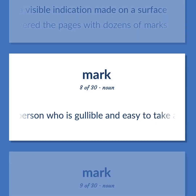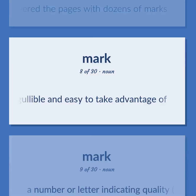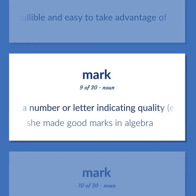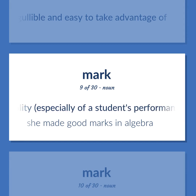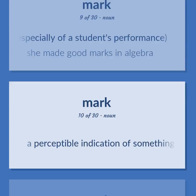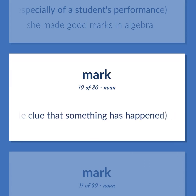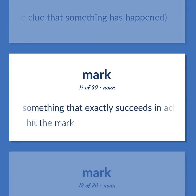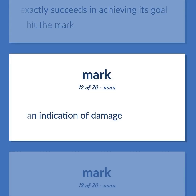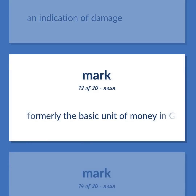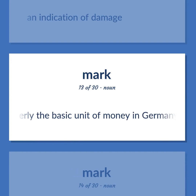Mark: A person who is gullible and easy to take advantage of. A number or letter indicating quality, especially of a student's performance. Example: She made good marks in algebra. A perceptible indication of something not immediately apparent, as a visible clue that something has happened. Something that exactly succeeds in achieving its goal. Example: Hit the mark. An indication of damage. Formerly the basic unit of money in Germany.